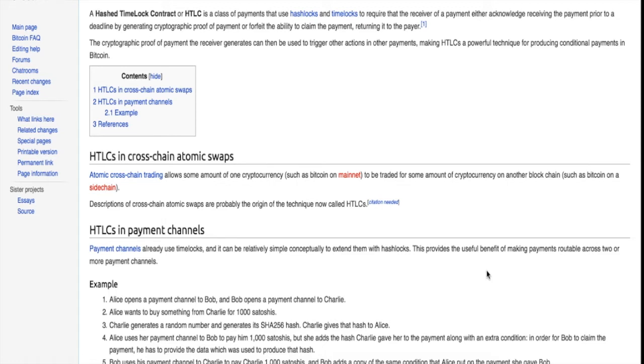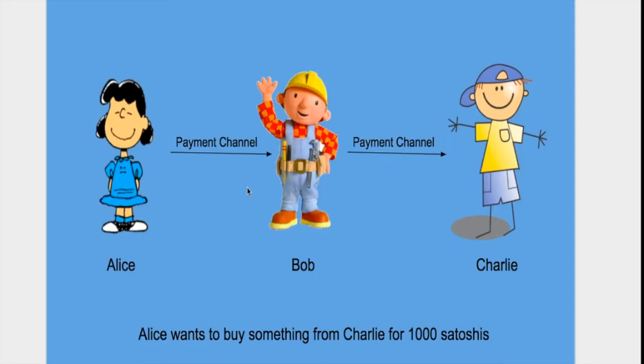The story is that Alice wants to buy something from Charlie for 1000 satoshis. She doesn't have a direct payment channel open with Charlie, but she has a payment channel open with Bob, who further has a payment channel open with Charlie.